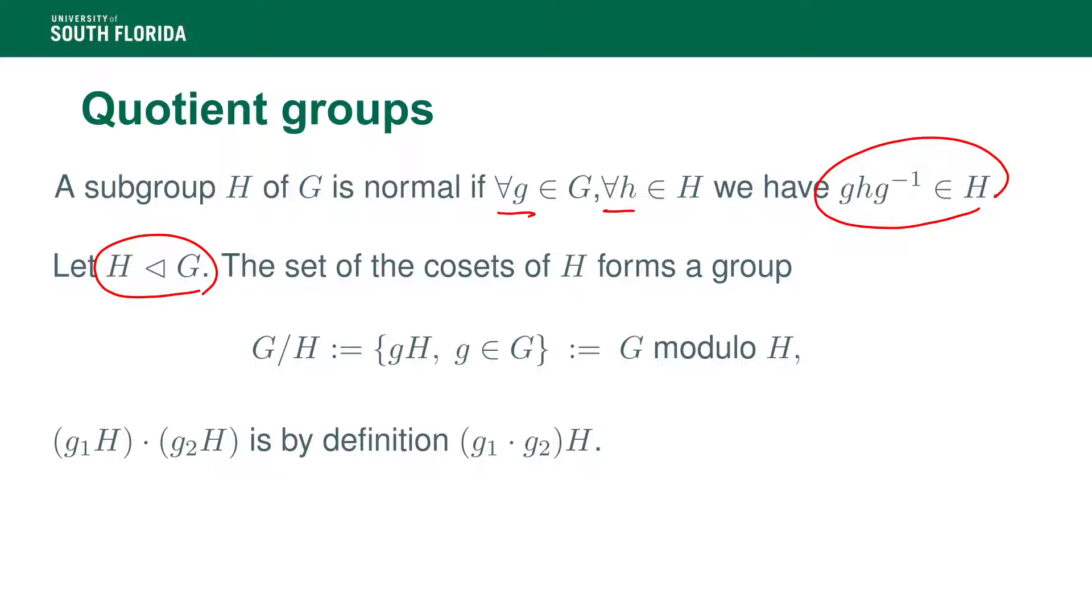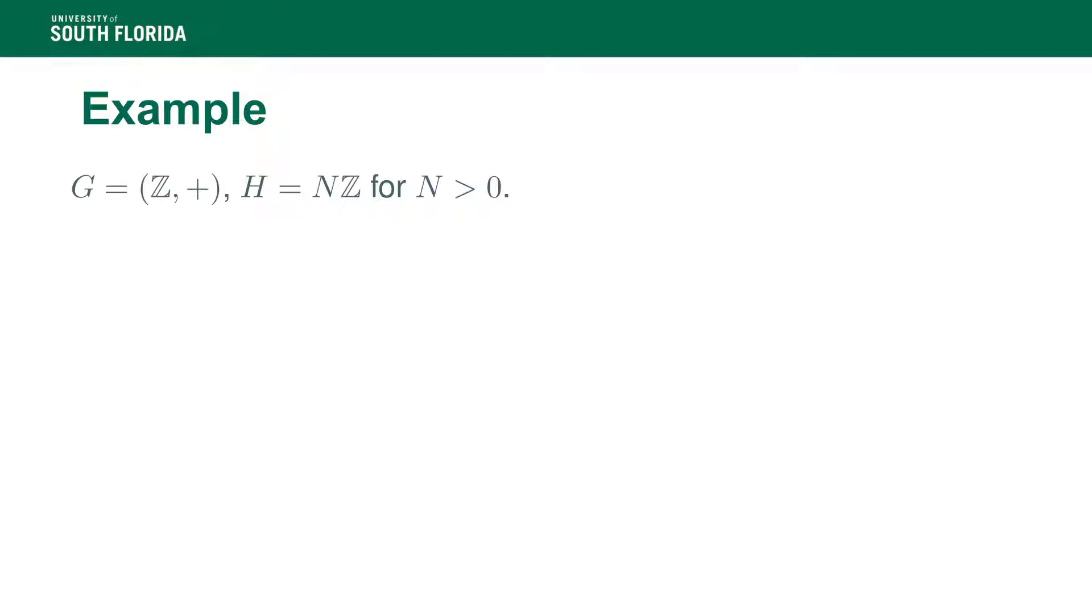This property, which we denote by H normal in G, implies directly that the set of cosets is in fact a group where the law between cosets is induced by the law between the elements of G. So we define the product of two cosets in the most natural way, which is the coset containing the product of a representative of each of the cosets. And this law is well defined as long as we have that H is normal.